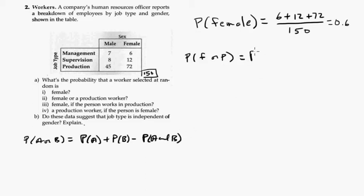So here, this would be the probability of female plus the probability of a production worker minus the probability of both. So we already did this. The probability of a female is 90 out of 150. If we added these up, we get 90. And for production, if we add them up, we get 117. So 117 out of 150.